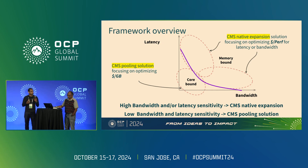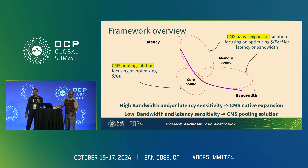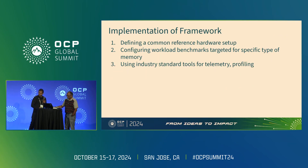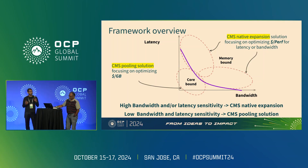Once you have your workload decomposed, analyzed, and profiled on memory requirements in terms of latency and bandwidth, the next step is to figure out what sort of CMS solution will provide value when optimizing for, say, dollar per gigabyte or dollar per performance, or whatever your success criteria is. At a high level, if your workload is memory-bound, you may want to start with a CMS native expansion device, because pooling by design will incur higher latency. This gives users guidelines on how to approach CMS solution design and right-size the solution to get the ROI benefit you're looking for.